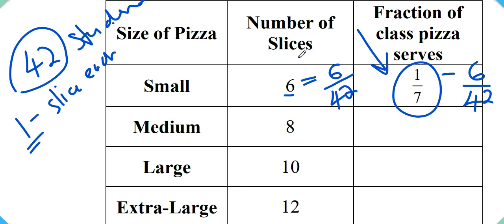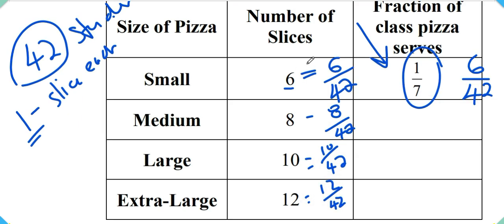Once a pep student solves this part, realizes that one seventh is an equivalent fraction of 6 over 42, the rest of it is clear. This simply means that this becomes 8 over 42, 10 over 42, 12 over 42. Because if the small pizza with six slices serves six out of the 42 students, the medium pizza with eight slices will serve eight out of the 42 students, the large pizza with 10 slices will serve 10 out of the 42 students, and the extra large pizza with 12 slices will serve 12 out of the 42 students.